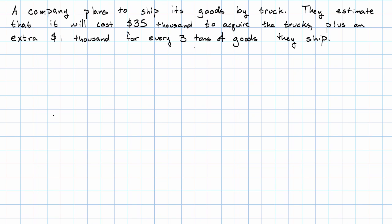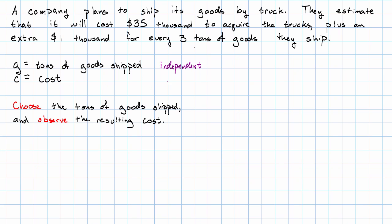The first thing we want to do is figure out what are the two things that are varying here. I think maybe we have G, tons of goods shipped, and maybe we'll say C is the cost. The most logical thing to do here, I think, is to choose how many tons of goods we'll ship, and then observe the resulting cost. Therefore, the tons of goods shipped will be independent, and the cost will be dependent.